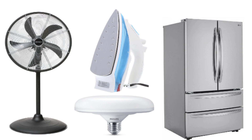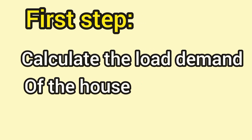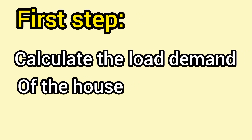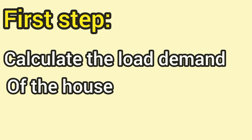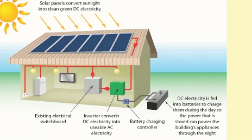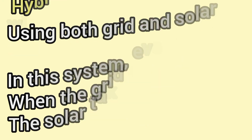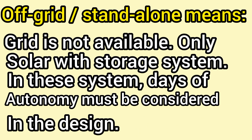In this video, we are going to look at how to construct a solar power system for a small household. To be able to do that perfectly, the first thing we need to do is calculate the load demand in that house. One other important thing we need to know before starting the calculation is whether our solar power system is going to be a hybrid system, a grid-tied system, or a standalone system — in other words, an off-grid system.